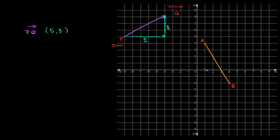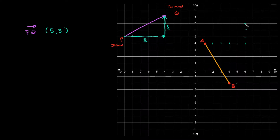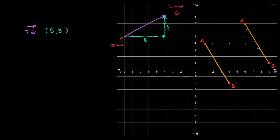Now if we wanted to move our line segment along vector PQ, we move it five spaces to the right and three spaces up. Starting from point A, we count five spaces to the right and three spaces up — that's where A lands. We do the same for the whole segment, moving it five right and three up.